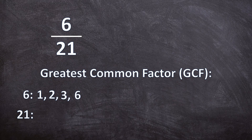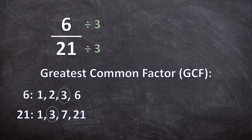And what can go into 21? One, three, seven, and 21. And what is the greatest common factor between them? Three. So we know we're going to divide the numerator and the denominator by three to get our simplified fraction. So six divided by three is two, and 21 divided by three is seven.